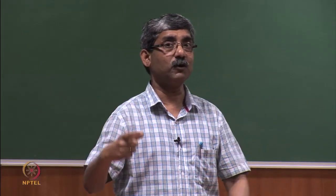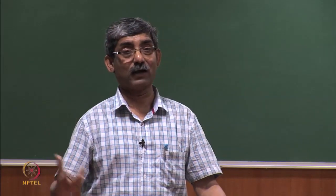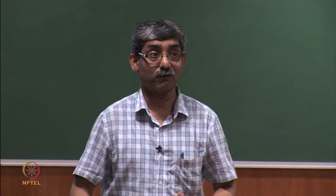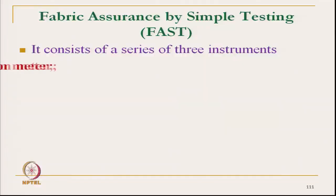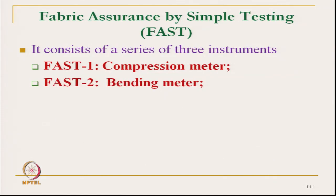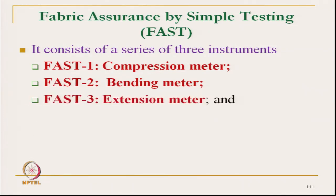The beauty of this system is that if we analyze properly, we will get a large number of very nice information. FAST has three instruments: FAST 1 is compression meter, FAST 2 is bending meter, and FAST 3 is extension meter. In all three, we do not get any curve. All three instruments work in one direction only — the loading direction. We do not get any information during the unloading direction.